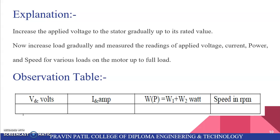Explanation: Increase the applied voltage to the stator gradually up to its rated value. Now increase load gradually and measure the readings of applied voltage, current, power, and speed for various loads on the motor up to full load. So observation table is VDC volt, IDC ampere, and wattmeter readings. There are two wattmeter readings, so total power is addition of both, which is W1 plus W2 watt, and speed in RPM.